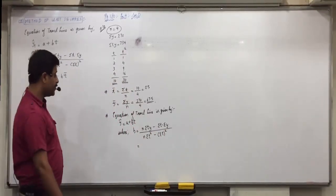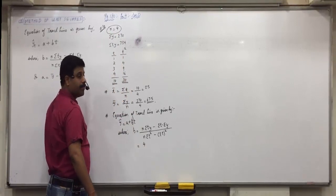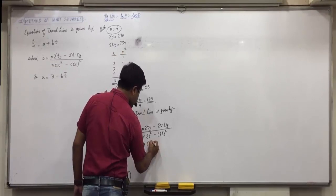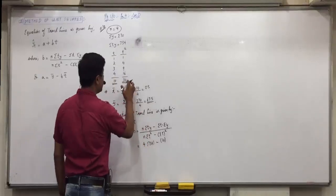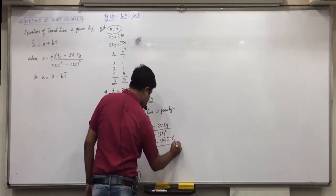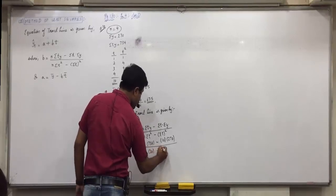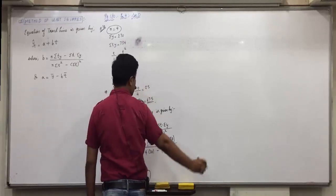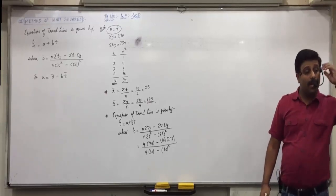We output the values. 4. N is given in the beginning as 4. Into 734. And sigma ty is also given in the beginning as 734. Minus 10. Minus sigma t we obtained as 10. Into 270. Into sigma y 270. It is given in the beginning. Upon 4. Upon n is 4. Into 30. Into sigma t square is 30. Minus sigma t. Minus sigma t we obtained as 10 whole square. Is everyone clear with this? That is equal to.